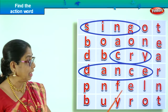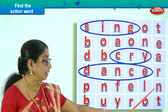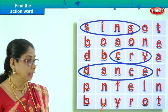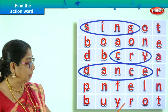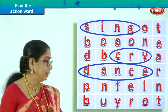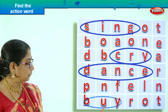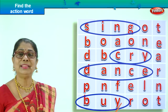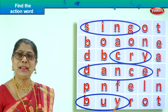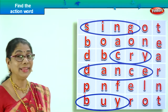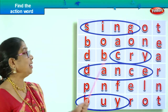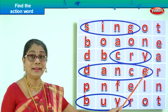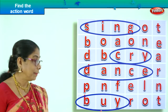P-N-F-E-L-N — any action word? No. B-U-Y-R-O-T — any action word? B-U-Y, buy. What is that? You buy anything — toys, vegetables, ice cream, anything. Buy. Let's look at all the action words we found so far: sing, cry, dance, buy.